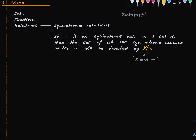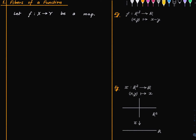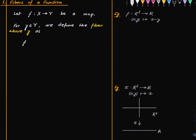So let's keep these things in mind and proceed. We will be defining fibers of a function — I may have done this in primers on relations or functions, but it's good to revise. Suppose we are given a function from a set X to set Y, then for a point little y in Y, we define the fiber above y. The fiber above y is the formal definition shown here.